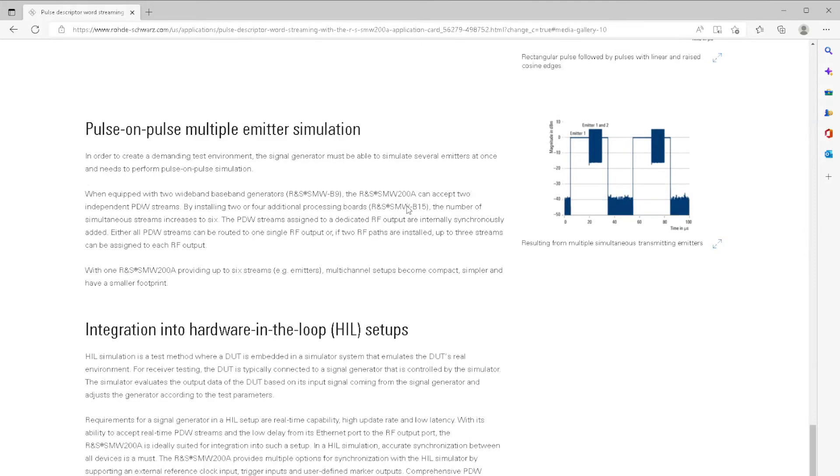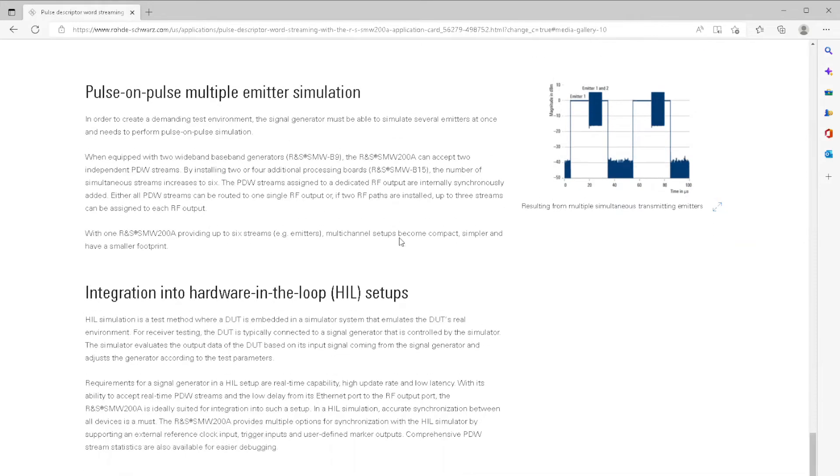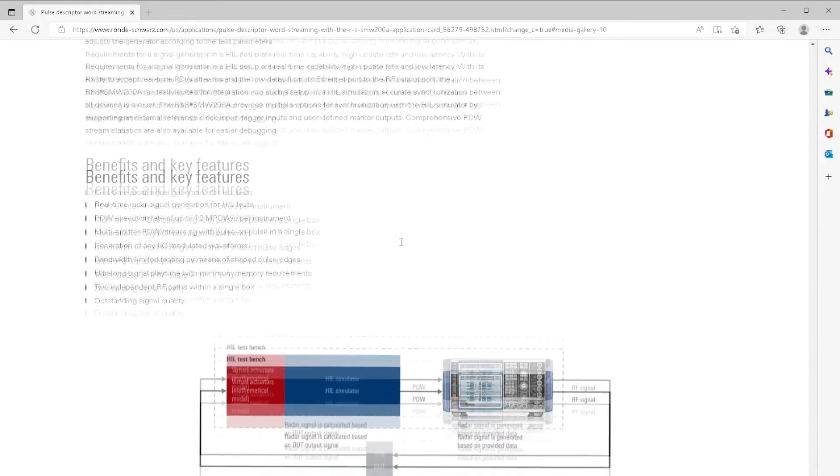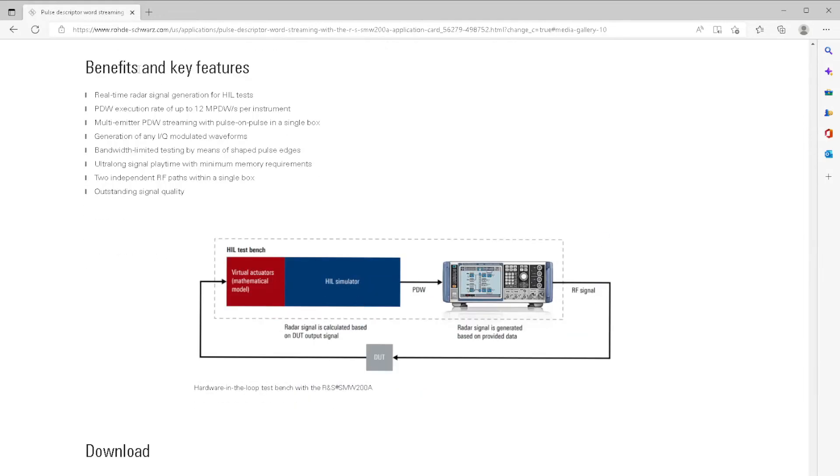So this product basically generates quite several pulses, it depends on our purposes, but it looks like quite complete product. Exactly, benefit, real-time radar simulator, execution rate, multi-emitter, which is super nice. You will usually want to simulate, to see what happened with our reception, with our ESM system under several threats, under several emitters.